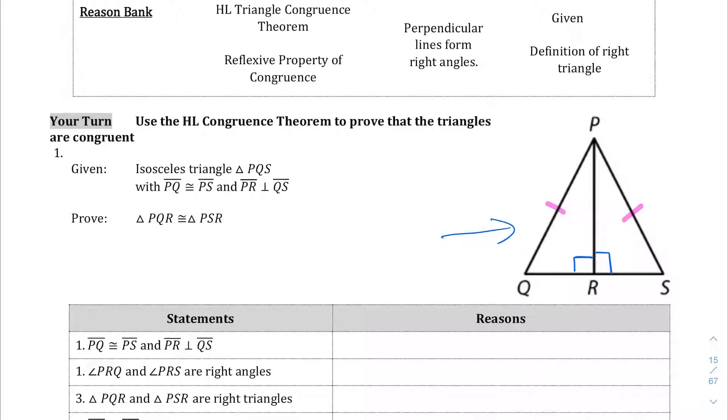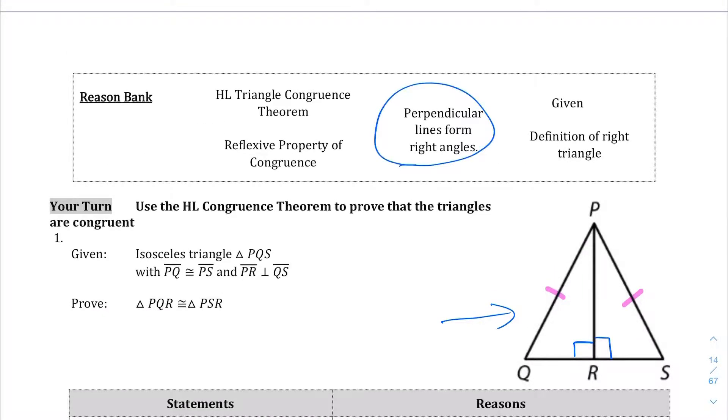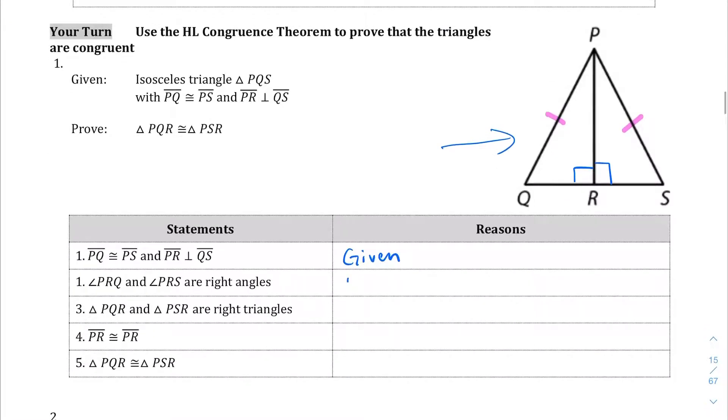So PQ being congruent to PS and PR being perpendicular to QS is going to be our given statement here. And then angle PRQ and angle PRS are right angles. How do we know that? We know that because perpendicular lines form right angles.